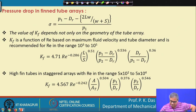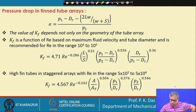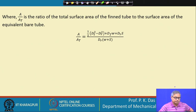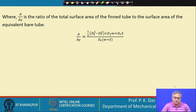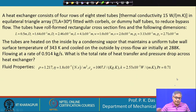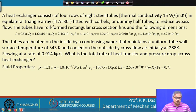Delta_P depends on K_a and K_f. K_a depends on sigma, and the slide shows how to calculate sigma along with existing correlations for K_f. Now let us move to the next slide. The ratio A/A_t is the ratio of the total surface area of the fin tube to the surface area of the equivalent bare tube. With this we can calculate the required quantities. Let us take up a problem to see how we can use what we have learned.